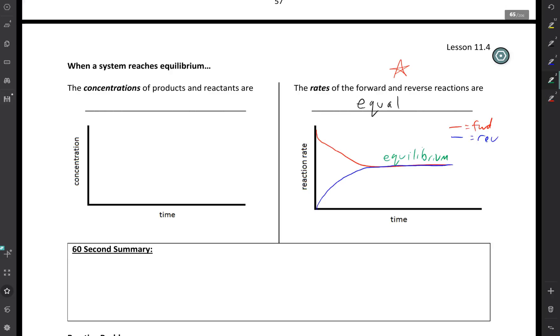We can also think about what's happening to the concentration of the products and the reactants at equilibrium. At equilibrium, concentrations of products and reactants are constant. They do not have to be equal to one another. They just have to be constant.